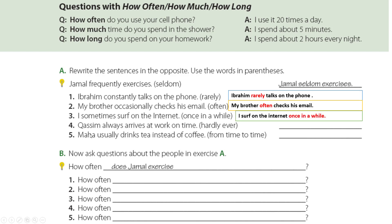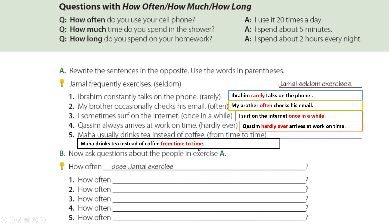Number four: 'Qasim always arrives at work on time' — the word in parentheses is 'hardly ever,' which is exceptional and comes in the middle of the sentence — so: 'Qasim hardly ever arrives at work on time.' We omit 'always.' Number five: 'Maha usually drinks tea instead of coffee' — 'from time to time' comes at the end — so: 'Maha drinks tea instead of coffee from time to time.' Now Exercise B: ask a question about the people in Exercise A.